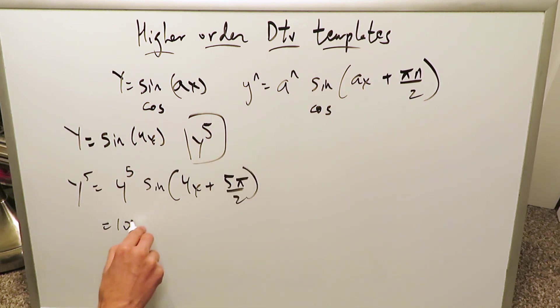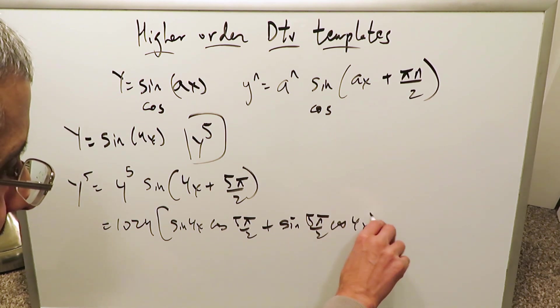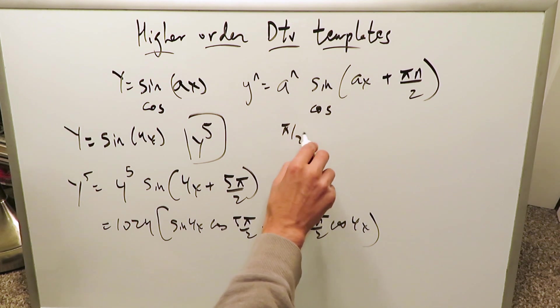4 to the power of 5 is equal to 1024 and now you would open this up using the sum formula of sine. That trigonometric identity you know, we will do it sine 4x cosine 5π/2. This right here is your sum formula for sine plus sine 5π/2 and cosine 4x. 5π/2 is coterminal with π/2.